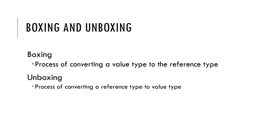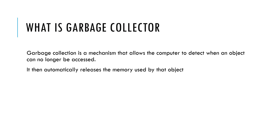What exactly are boxing and unboxing? Boxing is the process of converting a value type to a reference type. Unboxing is the completely reverse process — converting a reference type to a value type. What is the Garbage Collector? Garbage collection is the process or mechanism that allows the computer to detect when an object is no longer used or accessed, and then automatically releases the memory for that object.